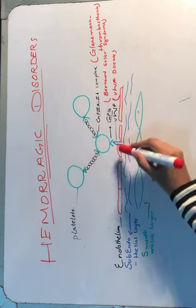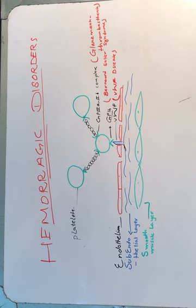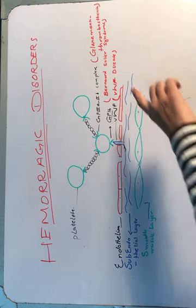So, whenever there is any deficiency of von Willebrand factor, there will be no adhesion of platelets and there will be a bleeding disorder known as von Willebrand disease.